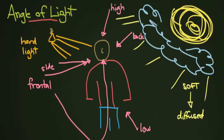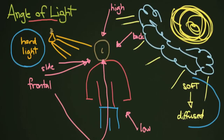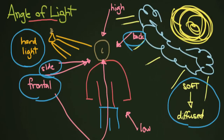Think about how different something could look if you're lighting it from the front versus from the back. For the purposes of this lesson, you want to think about two things: the hardness of the light, and the direction of the light — whether it comes from the front, from the side, from the back, and if it comes from low or from above. So let's take a look at what this might look like in a photograph.